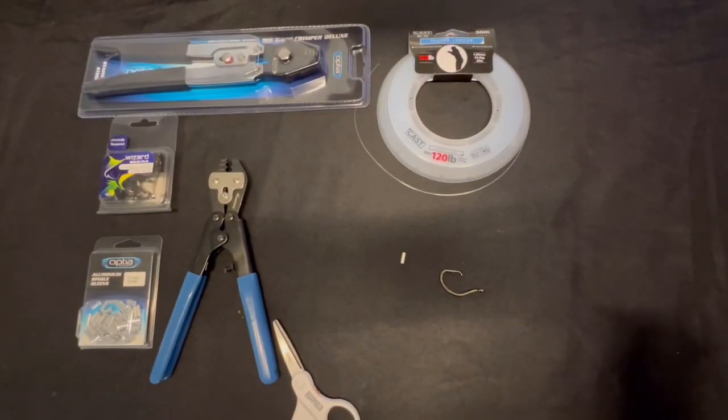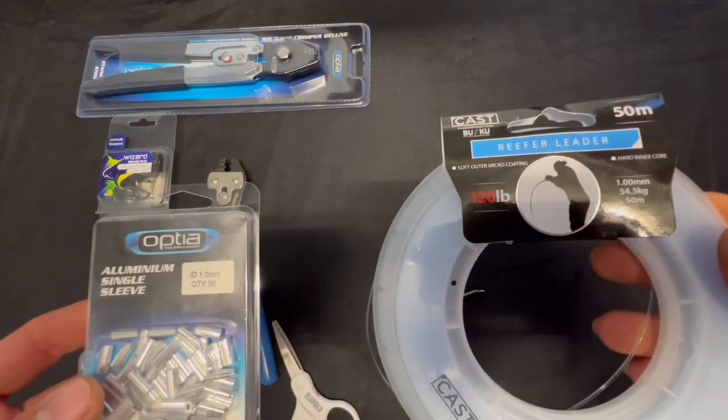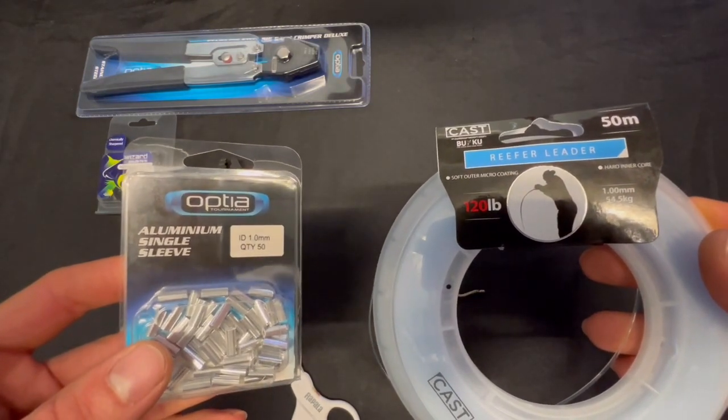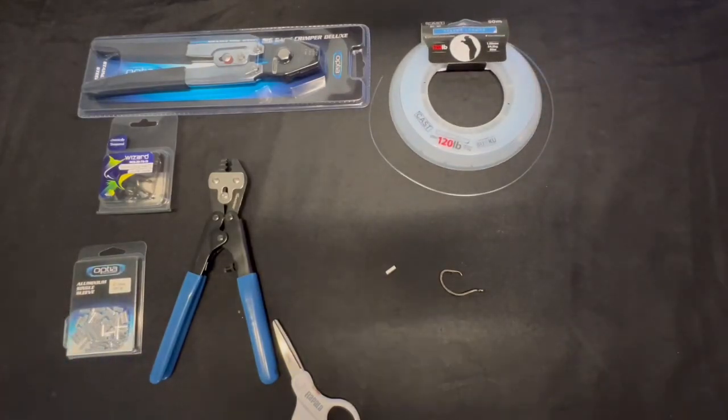We've got our leader, 120 pound leader, one millimeter diameter, and we've got some one millimeter size crimps which will fit in there. But to do this first, we need to actually just cut a little bit off the end of the leader to show you in a moment.